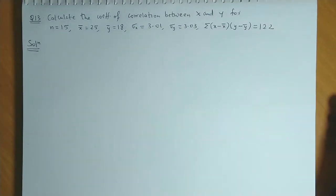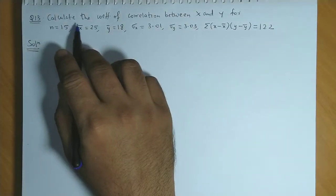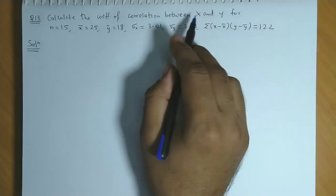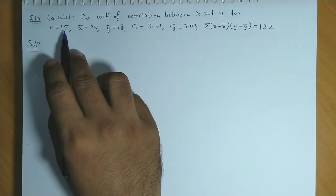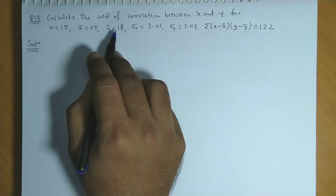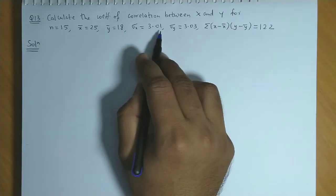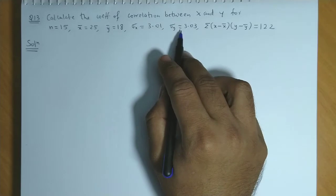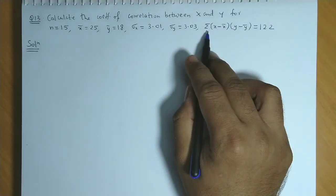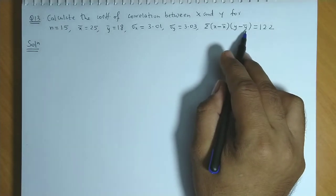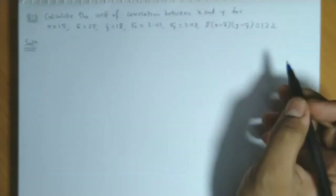Let's solve a correlation problem. Calculate the coefficient of correlation between x and y for the following data: n is 15, x bar 25, y bar is 18, standard deviation x 3.01, standard deviation of y 3.03, and summation x minus x bar into y minus y bar is 122.